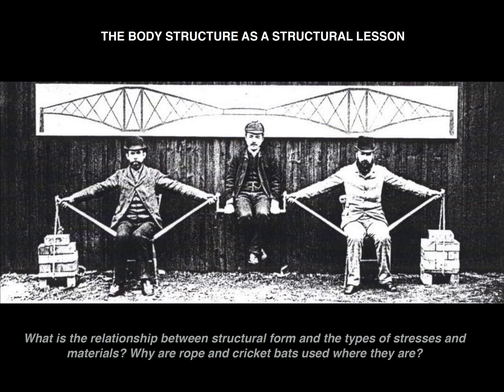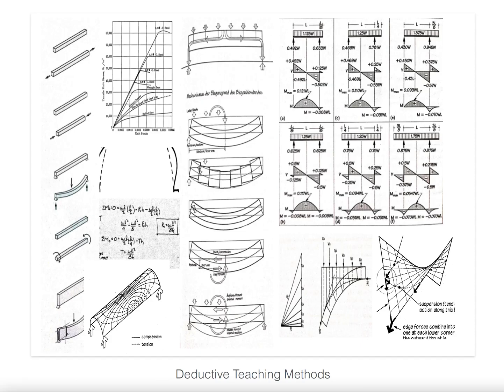Think also about these body reenactments as critical structural lessons. We're looking at the Forth Bridge reenactment and asking: what's the relationship between structural form and the types of stresses? Why is rope used where it is? Why are the cricket bats used where they are? Why is there a brick on the two sides? How is the gentleman supported in the middle? How do they remain in equilibrium? Once you start to enact this, you'll really see the benefits of discussing very difficult structural lessons right away.